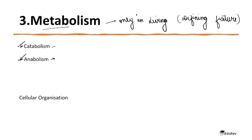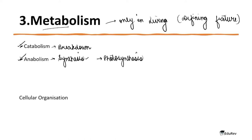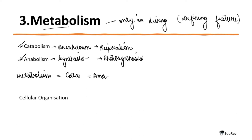Anabolism is the synthesis of macromolecules — it is the synthesis. Catabolism is the breakdown of macromolecules. Whenever a product is formed it is anabolism; an example is photosynthesis. Whenever a product is broken down into smaller ones, that is catabolism; for example, respiration. So metabolism equals catabolism plus anabolism. In any cell, the processes of both breaking down and synthesis are occurring simultaneously.